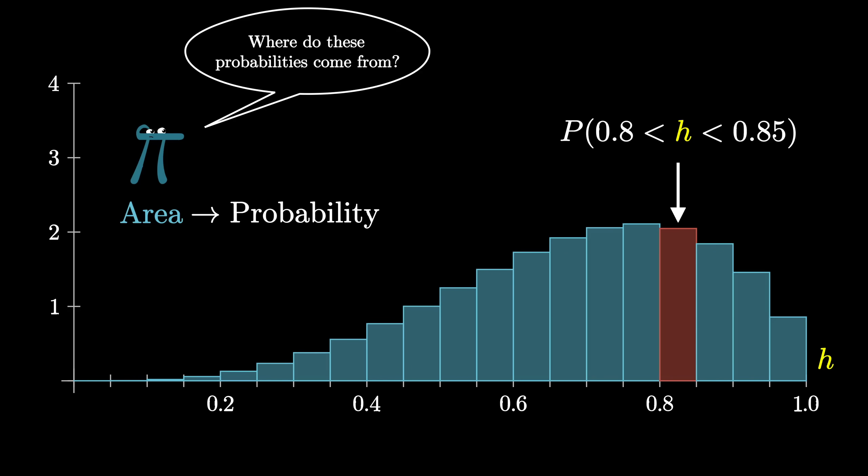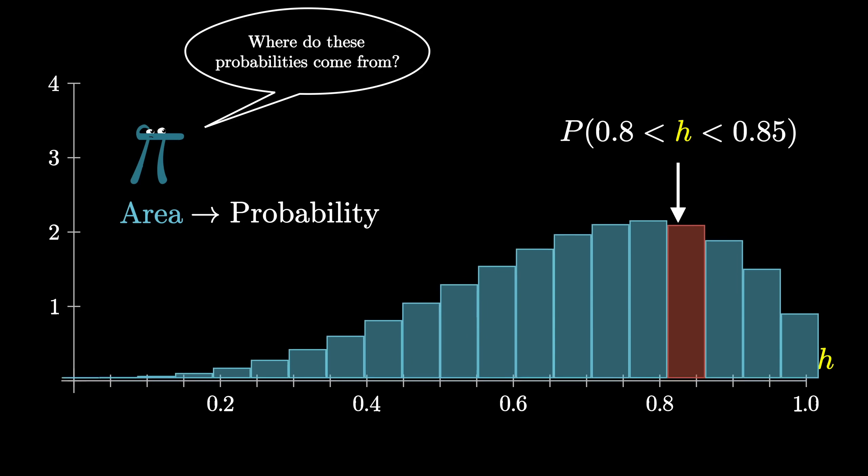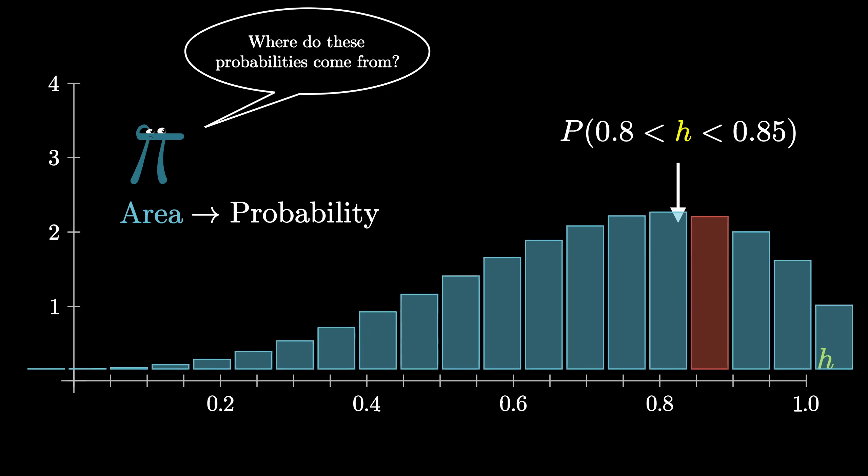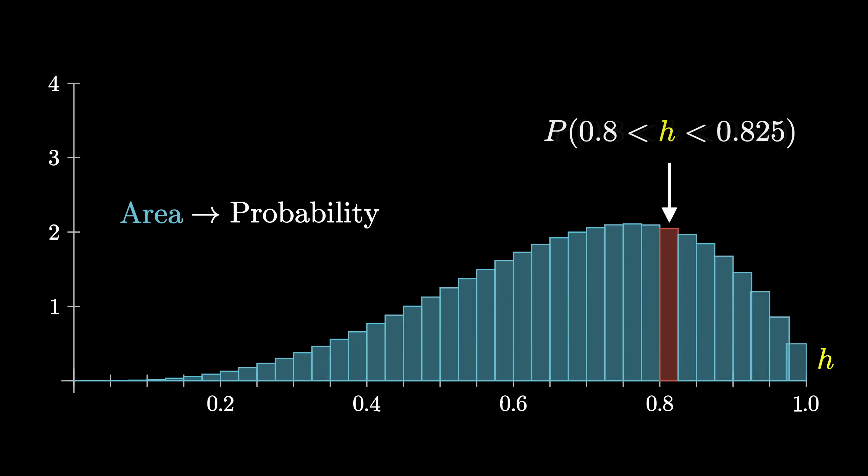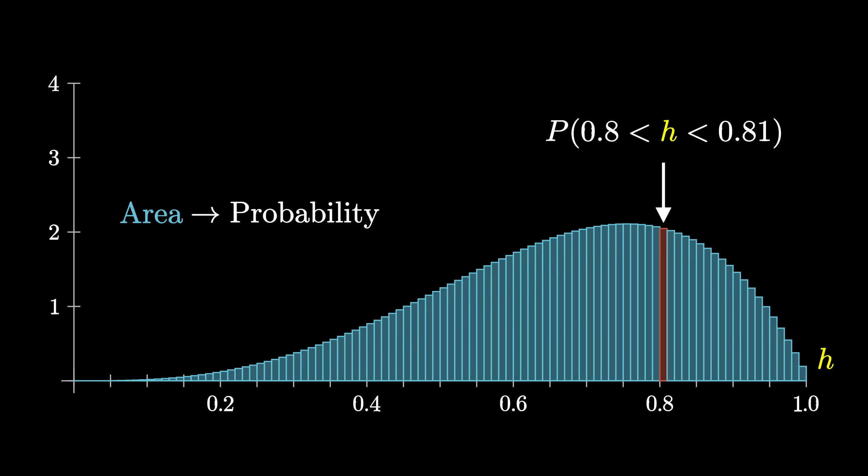Our task right now is to take the answers to these very coarse-grained questions and to get a more exact understanding of the distribution at the level of each individual input. The natural thing to do would be consider finer and finer buckets, and when you do, the smaller probability of falling into any one of them is accounted for in the thinner width of each of these bars.